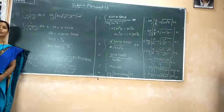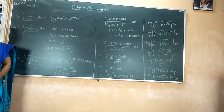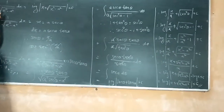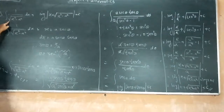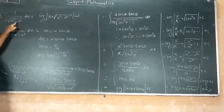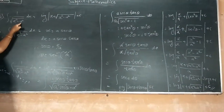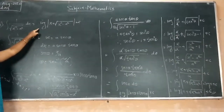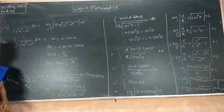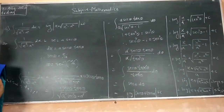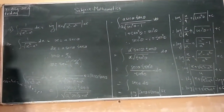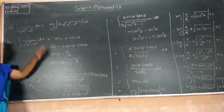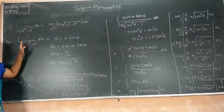We have to see the whole property of the integration. The integration of 1 over the square root of x squared minus a squared dx is equal to log modulus of x plus square root of x squared minus a squared, plus c.